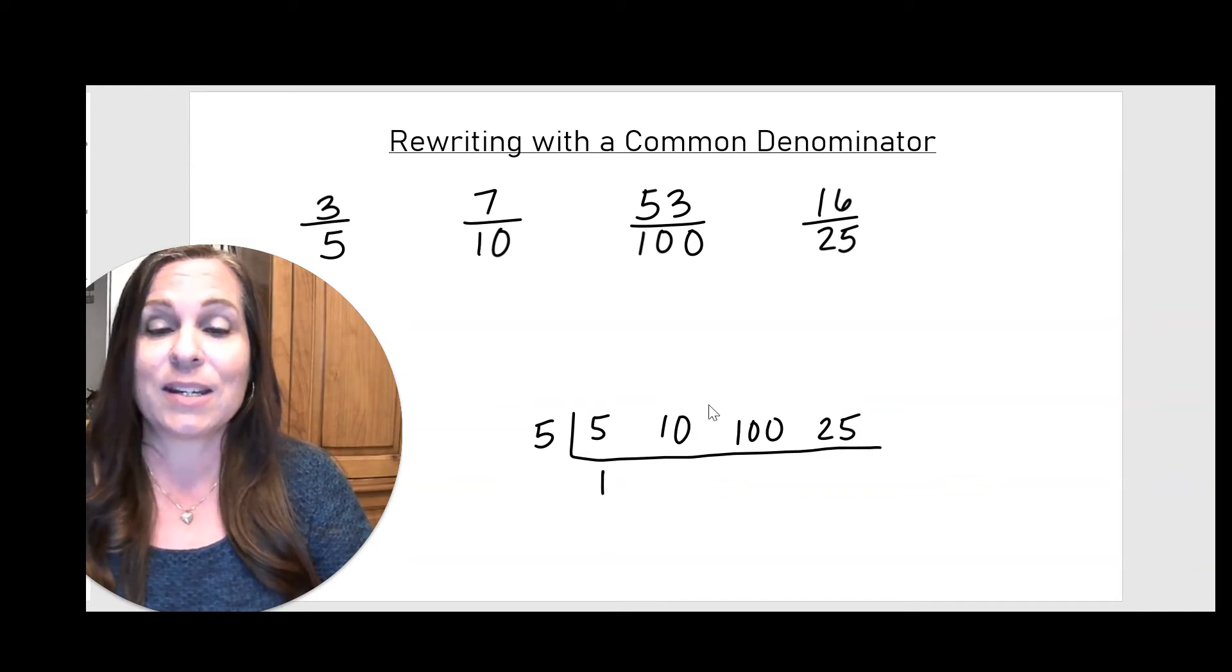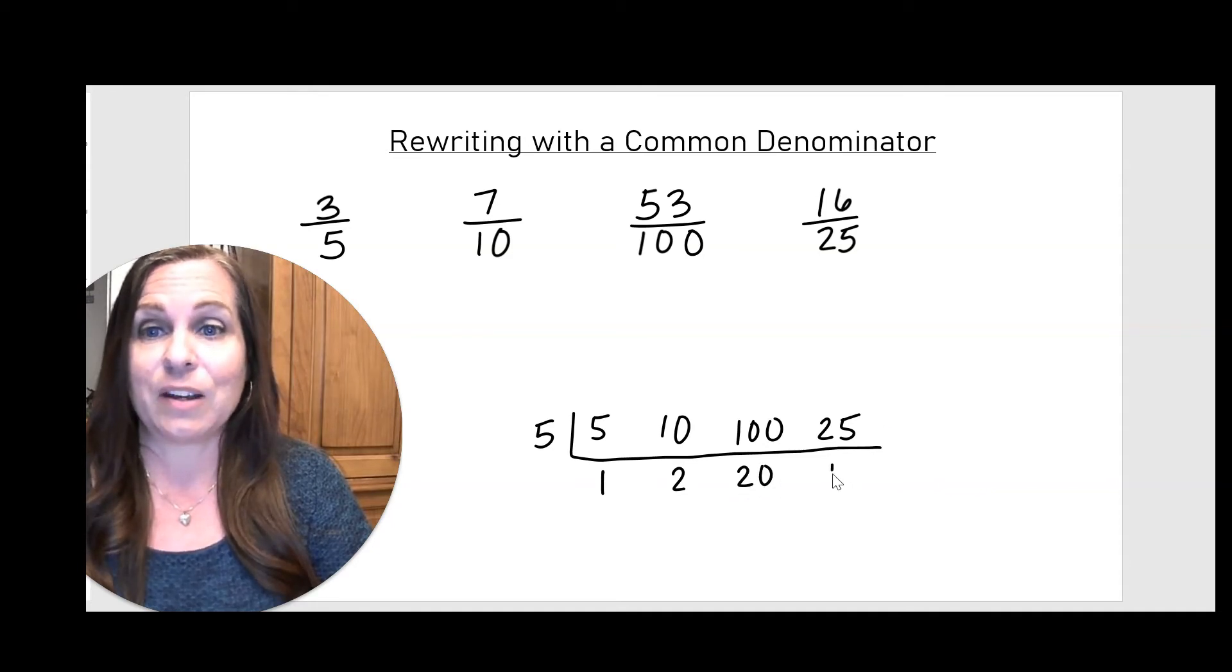So let's do it. 5 divided by 5 is 1, 10 divided by 5 is 2, 100 divided by 5 is 20, and 25 divided by 5 is 5.